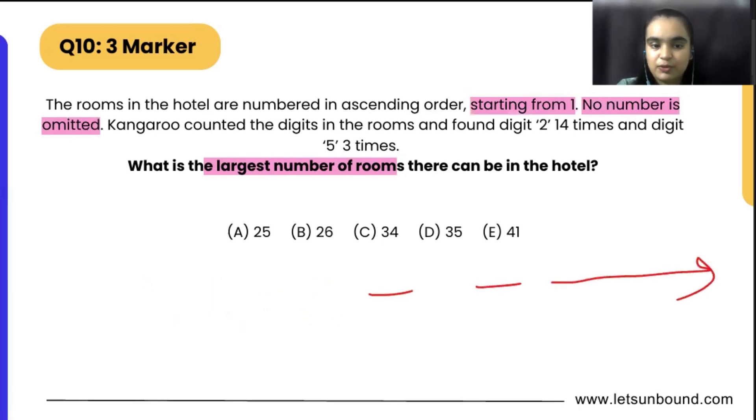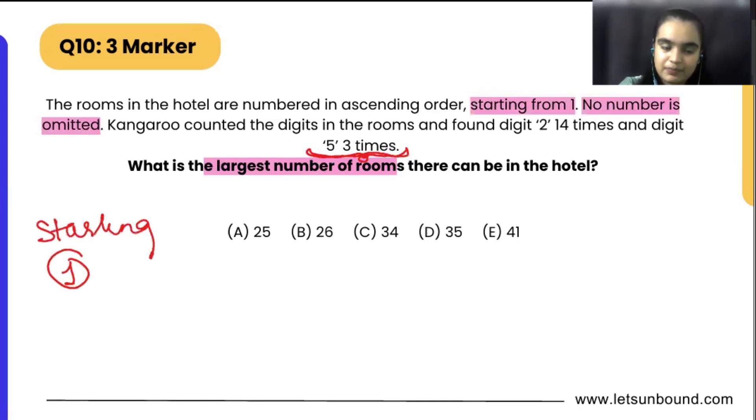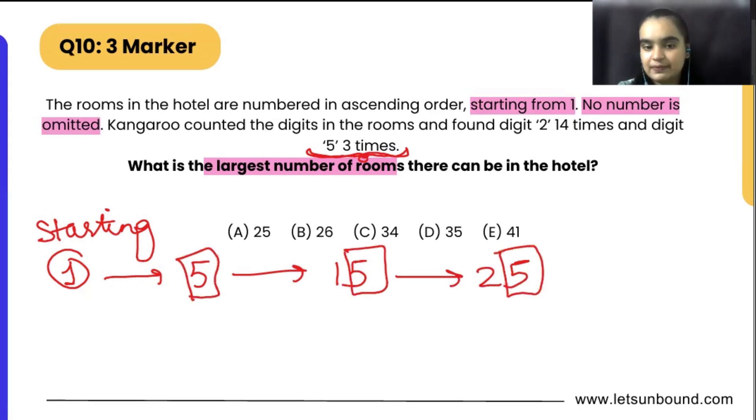The easiest way of doing this is start from the least number which they have provided. That is, 5 occurs 3 times. If we are starting from 1, we will get 5, and then we will get 15, and then we will get 25. That's how we got exactly 3 fives.